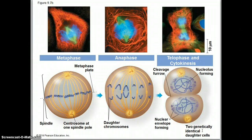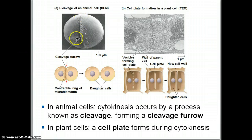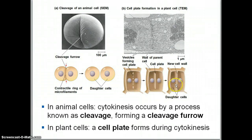Cytokinesis will take place where the cells will pinch off and form two genetically identical cells. The purpose of mitosis is to form two genetically identical cells — we're not changing the DNA, we just want to make two cells. Plants and animals differ a little bit in how cytokinesis takes place. In animals, we call it cleavage — the cleavage furrow is where the cell membrane contracts and they pinch off into two cells. In a plant cell, a cell plate will form between the two cells, giving rise to the new cell wall and separating the two daughter cells.